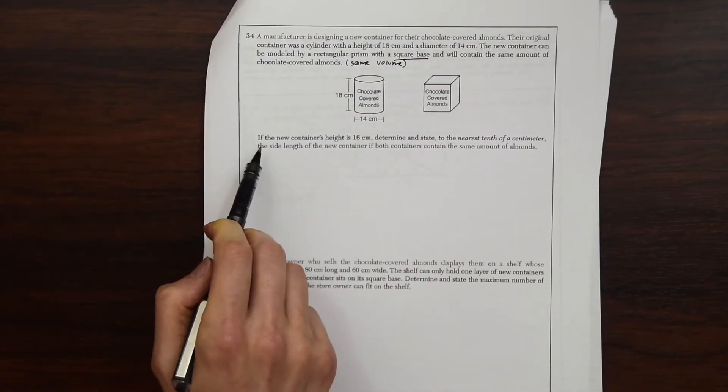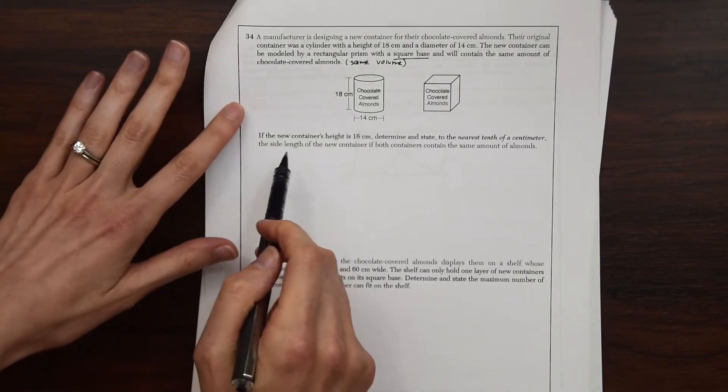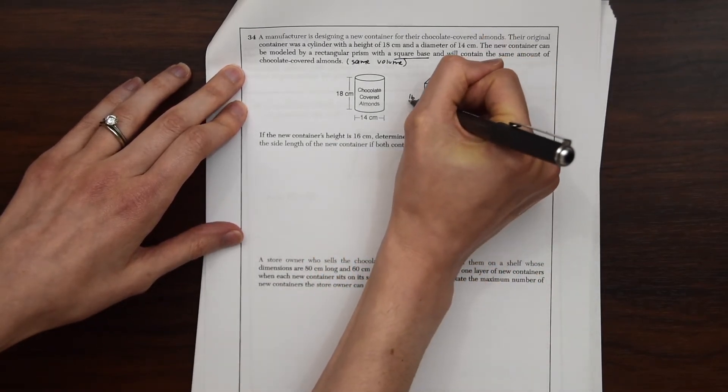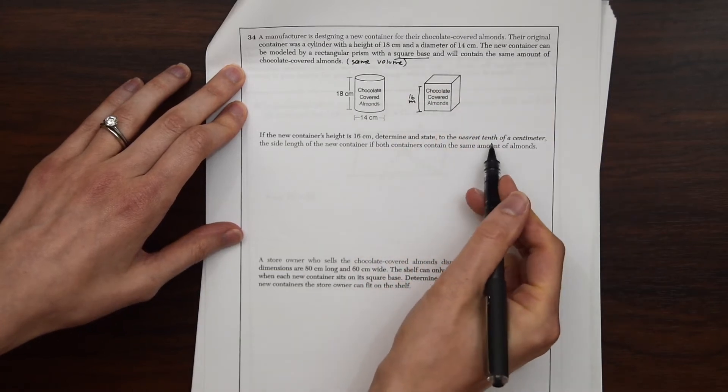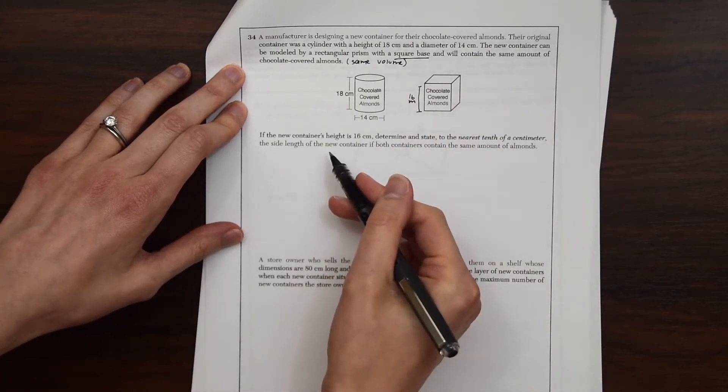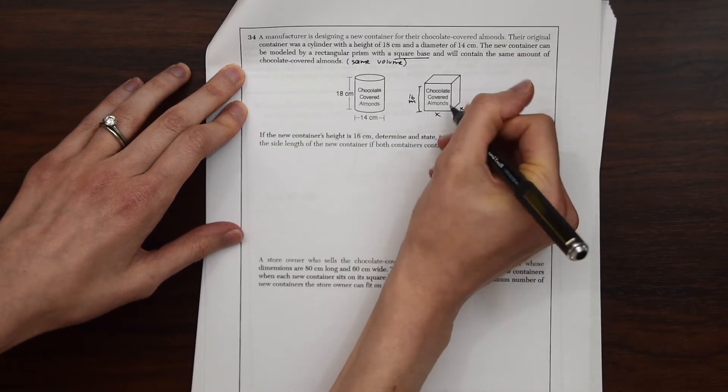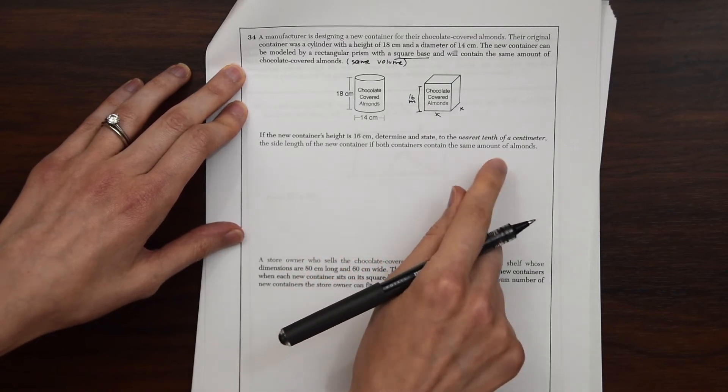So now we're down here. Let's see what other information they're going to give us. If the new container's height is 16 centimeters, so this is the new container, so this is 16 centimeters, determine and state to the nearest tenth of a centimeter the side length of the new container. So we want to find out the new side length of the new container if both containers have the same amount of almonds.